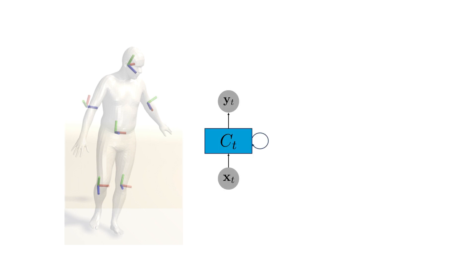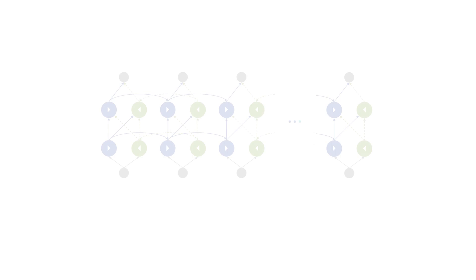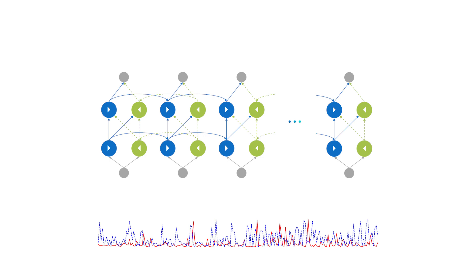We train a recurrent neural network on this data to predict the pose parameters of the whole human body as outputs. We leverage a bi-directional RNN that has access to the entire sequence at training time. At test time, our approach supports two regimes.